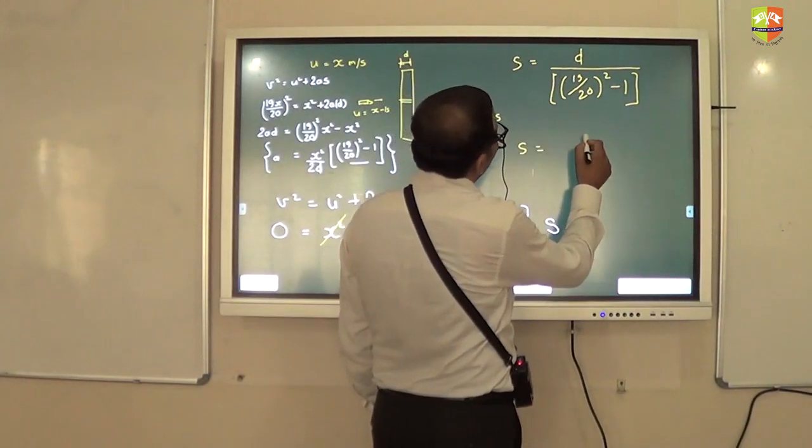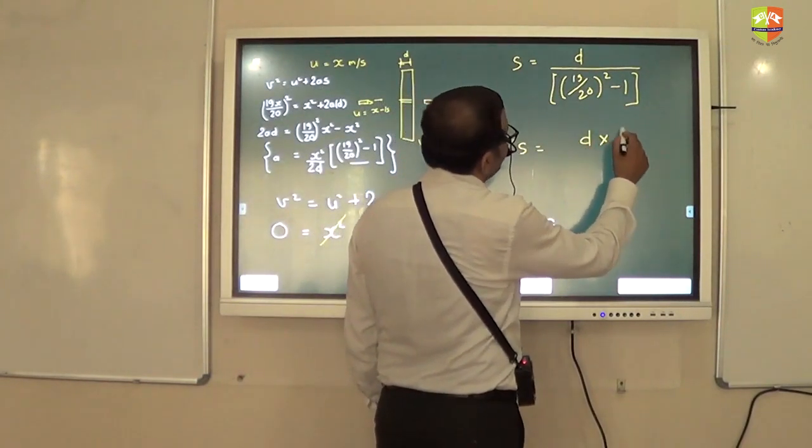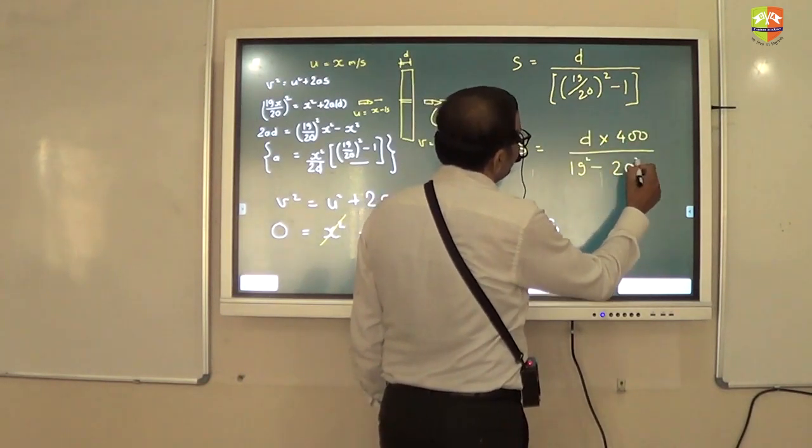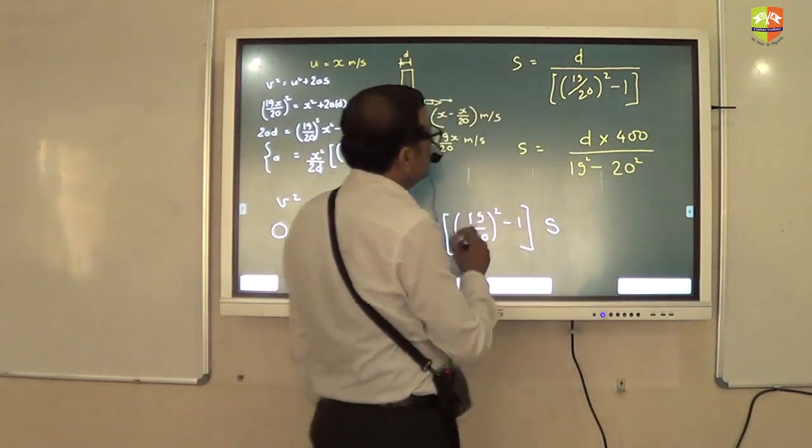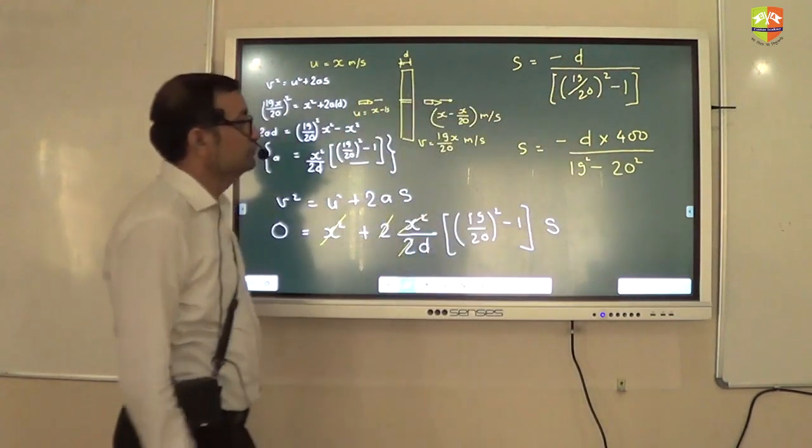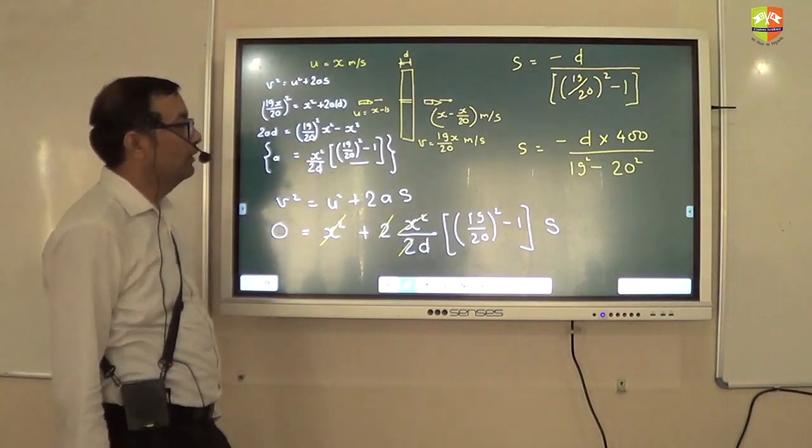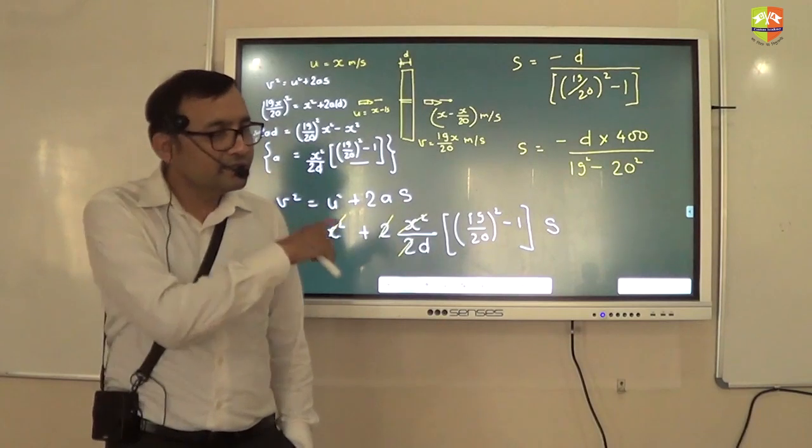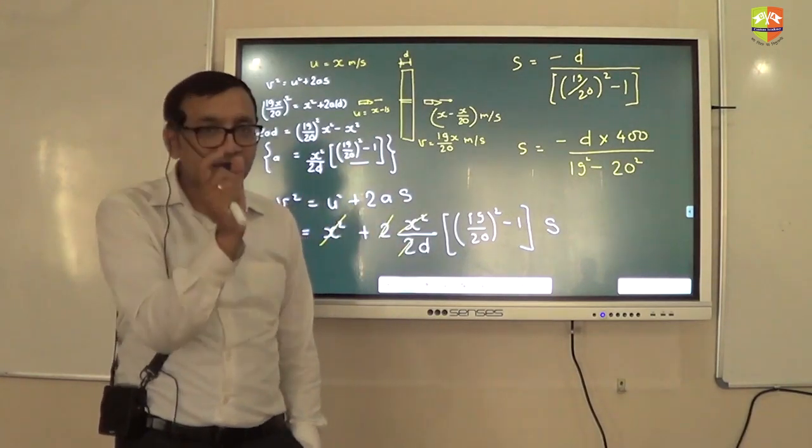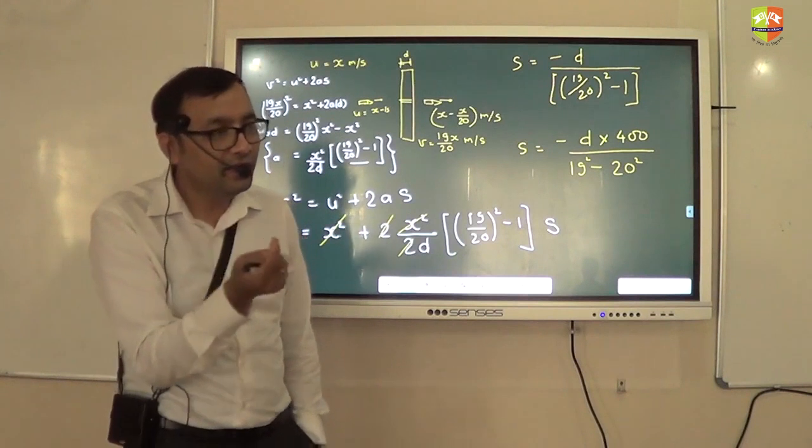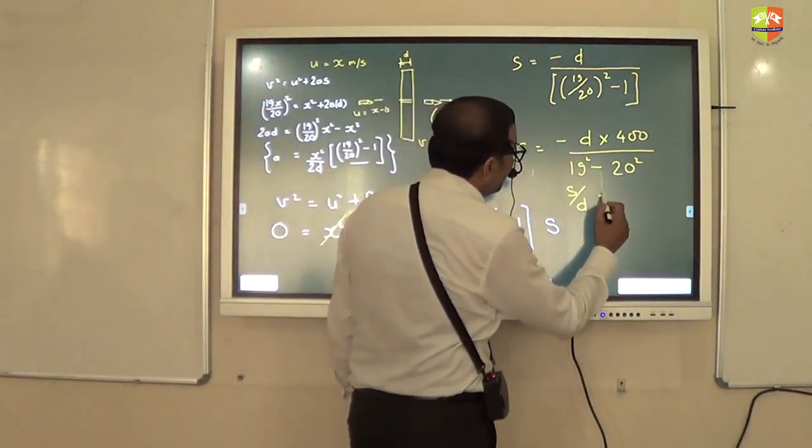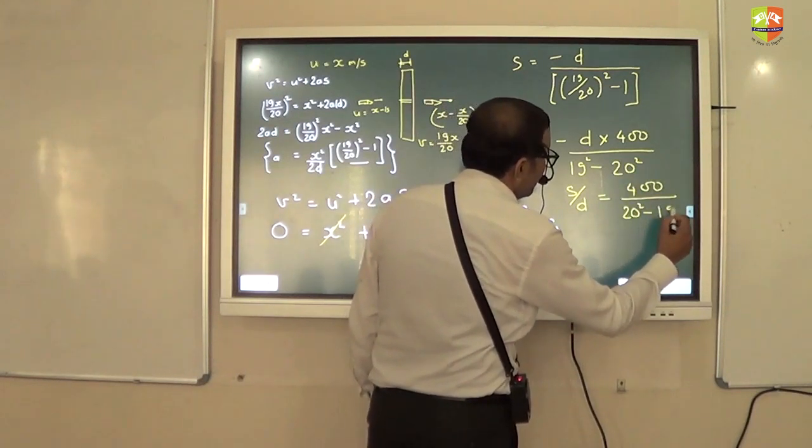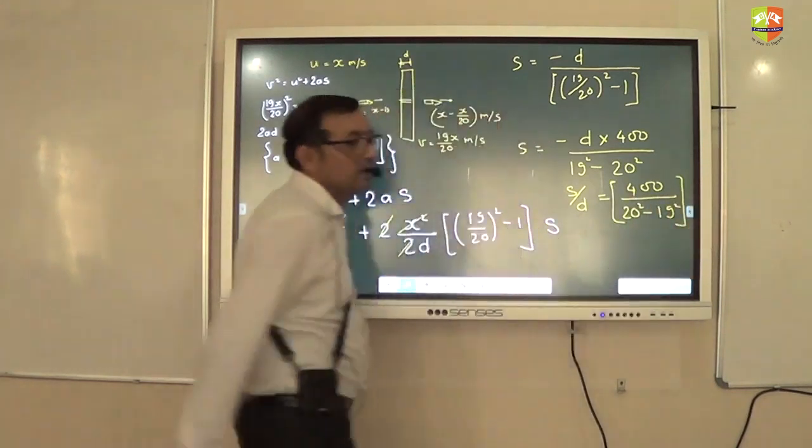So s will be equal to d into 20 square which is 400 divided by 19 square minus 20 square. Minus of that. Okay? So you get s. How you get number of planes? This s divided by distance of one plane which is d. Okay? So s by d is the number which is 400 divided by 20 square minus 19 square. This is the answer.